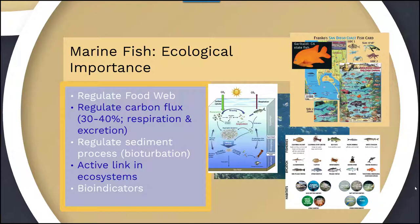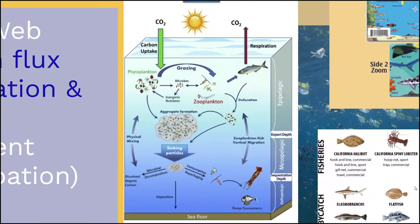Fish are an active link in ecosystems and are often termed bioindicators, meaning that if there's something wrong with a fish population, it's usually a sign that something else is wrong in the ecosystem. Fish in the epipelagic region contribute to respiration, releasing carbon dioxide into the atmosphere. They also defecate, which results in mixing of different nutrients and sinking particles into various nutrient and nitrogen cycles. Deep consumers — fish in deeper water — contribute to these processes as well.